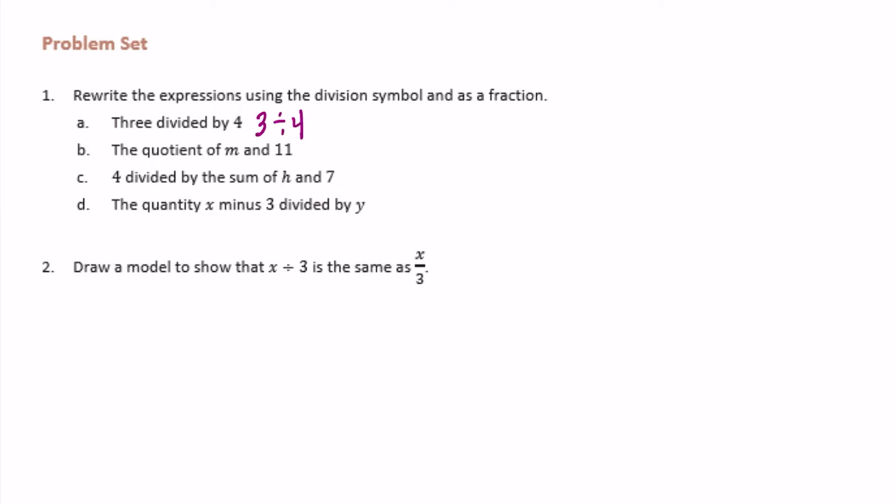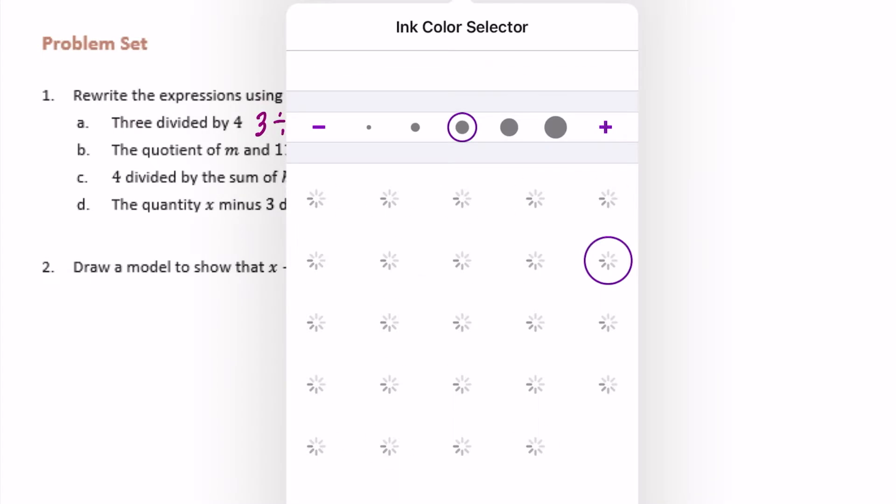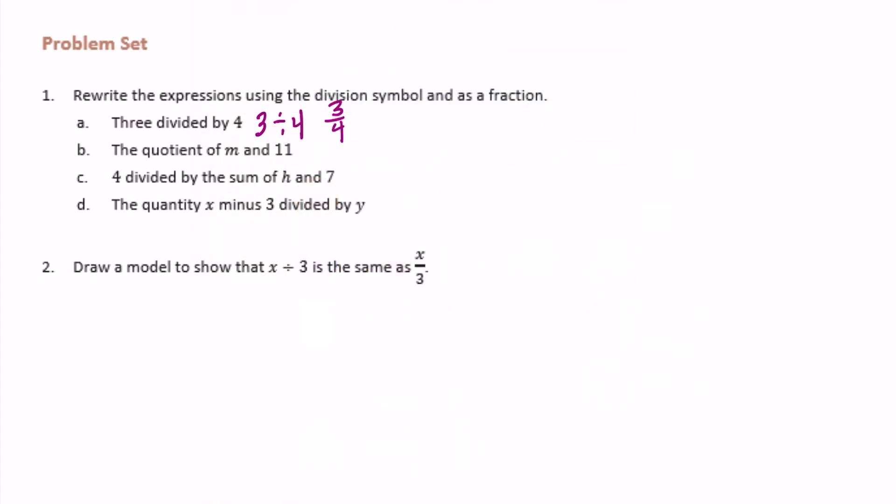3 divided by 4 and as a fraction would be 3 over 4. The quotient of m and 11. So let's write it with a division symbol m divided by 11 and m over 11.